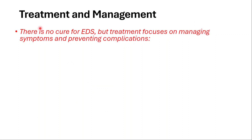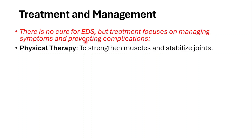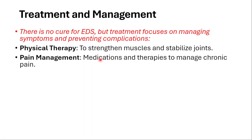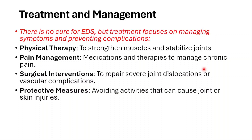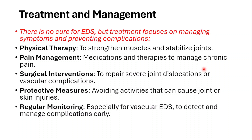Treatment and management: there is no cure, but treatment focuses on managing symptoms and preventing complications. Physical therapy to strengthen muscles and stabilize joints. Pain management: medications and therapies to manage chronic pain. Surgical interventions to repair severe joint dislocations or cardiovascular complications. Protective measures like avoiding activities that can cause joint or skin injuries. Regular monitoring, especially for the vascular type, to detect and manage complications.